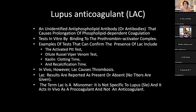Lupus anticoagulant refers to unidentified antiphospholipid antibodies that cause prolongation of phospholipid-dependent coagulation in vitro. Tests that can confirm the presence of lupus anticoagulant include: activated PTT, dilute Russell viper venom test, kaolin clotting time, and recalcification time. Results are reported as present or absent — no titers are given. The term 'lupus anticoagulant' is a misnomer: it is not specific to lupus/SLE, and it acts in vivo as a procoagulant, not as an anticoagulant.